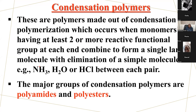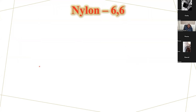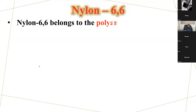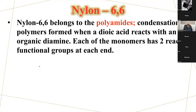For nylon 6-6, first of all, it is called nylon 6-6 because it is made up of two monomers, each monomer containing six carbon atoms. The name was derived from the fact that the two monomers that make nylon — one was discovered in New York and the other one was discovered in London, hence the name nylon. Nylon belongs to the polyamides because an amide group is formed when a dicarboxylic acid reacts with an organic diamine. Each of the monomers has two reactive functional groups at each end.